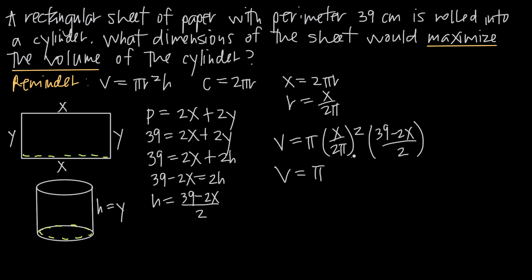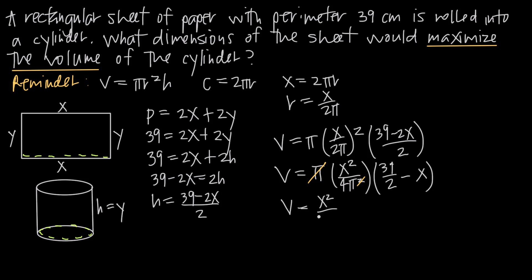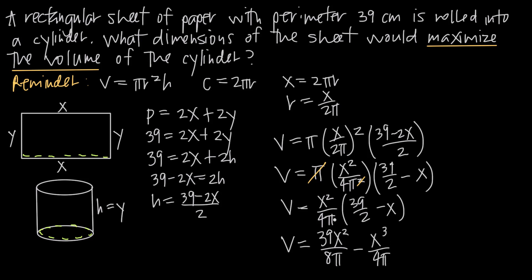We need to simplify this equation enough to take its derivative. Squaring x/(2π) gives x²/(4π²). Multiplying by π cancels one π from the denominator, and expanding (39 − 2x)/2 as 39/2 − x, we arrive at V = (x²/4π) · (39/2 − x).